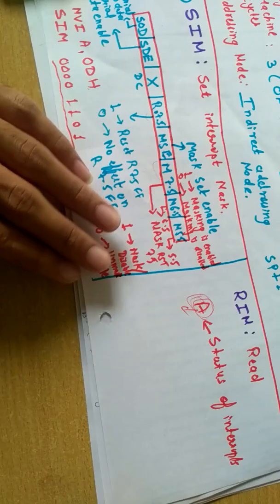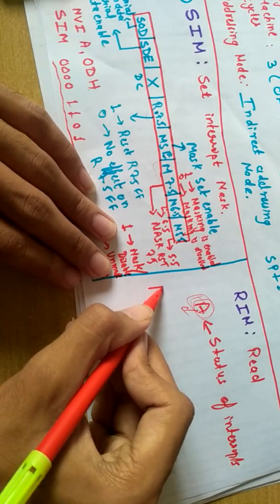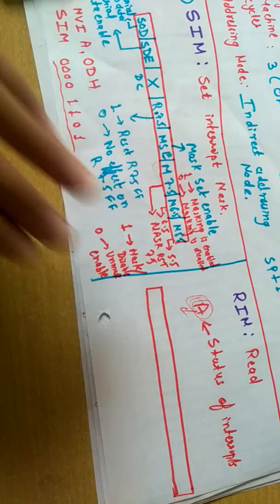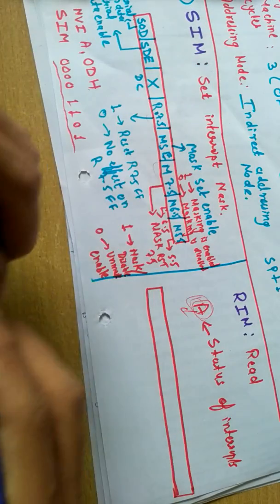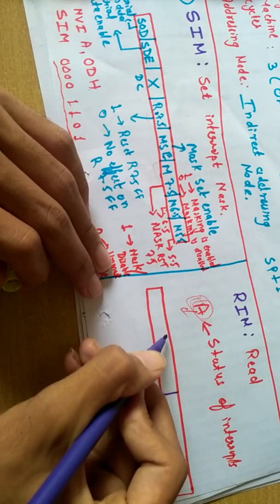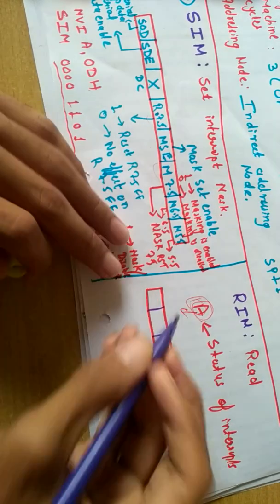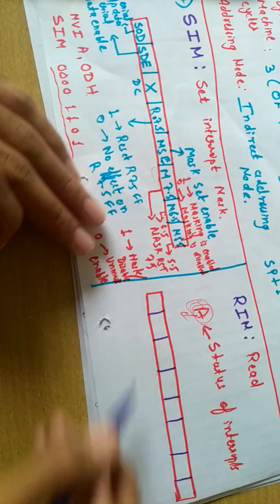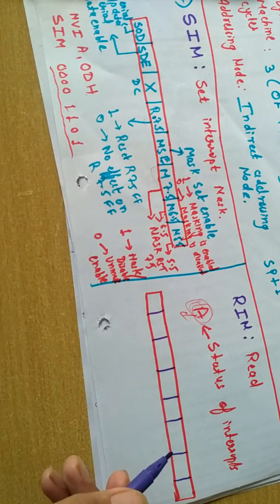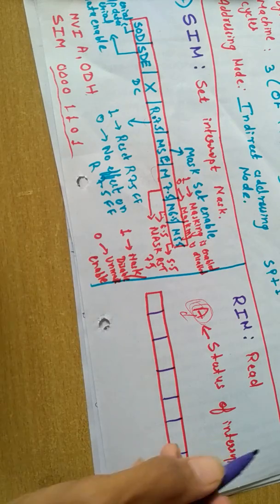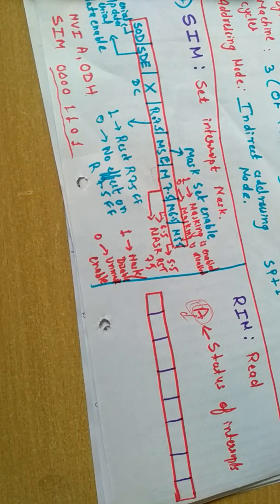Here also we have 8 bits, same thing but here the bits are different. It's just used for reading purpose. I'm just giving a brief introduction; the detailed explanation will be carried on in the next video because the video will be longer.